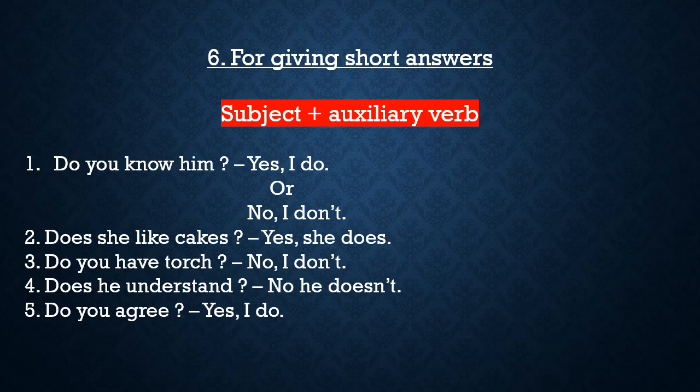Sixth use is for giving short answers. Rule: subject plus auxiliary verb. Examples: 'Do you know him?' — you can say 'Yes, I do' or 'No, I don't.' It is not necessary to say 'Yes, I know him' or 'No, I don't know him.' Similarly, 'Does she like cakes?' — 'Yes, she does.' 'Do you have a torch?' — 'No, I don't.' 'Does he understand?' — 'No, he doesn't.' 'Do you agree?' — 'Yes, I do.'